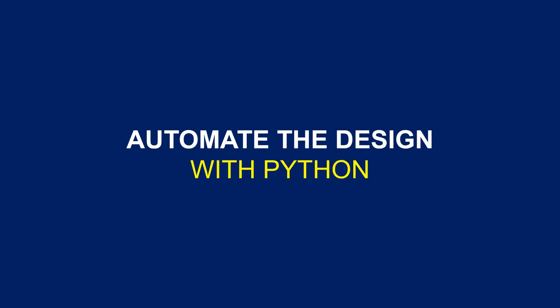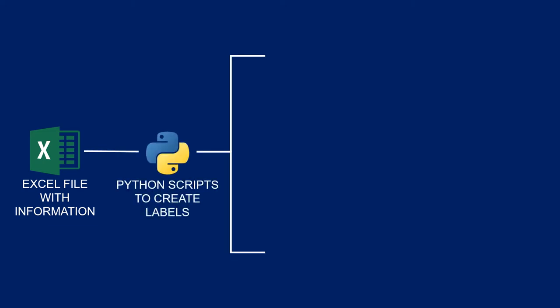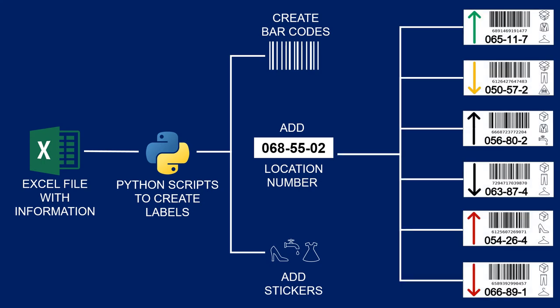Now that we know what to do, let's automate it using Python. The workflow will be like this: first, prepare an Excel file with all the locations including item information to generate the labels. Then your Python script will import this file and generate barcodes from the SKU number, location numbers from the Excel file, and visuals using the icons. You then run a loop through all the locations and your labels are generated. Finally, you can generate 10, 100, or 1000 labels automatically and export them in PNG, PDF, or any format you want for printing.